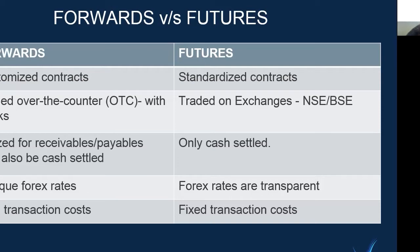Since forward contracts are traded over the counter with the banks, they can be utilized for receivables or payables and can also be cash settled. On the other hand, because futures contracts are traded on exchanges, they can only be cash settled. Forward contract markets are opaque for trade — they are not very transparent markets. On the other hand, the forex rates in futures markets are very transparent for the general public. Because forward markets are not very transparent, they have a high transaction cost, while the transparent futures markets have fixed transaction costs.